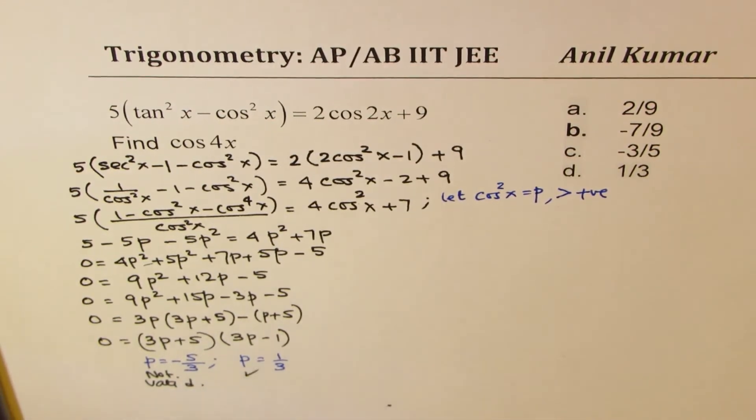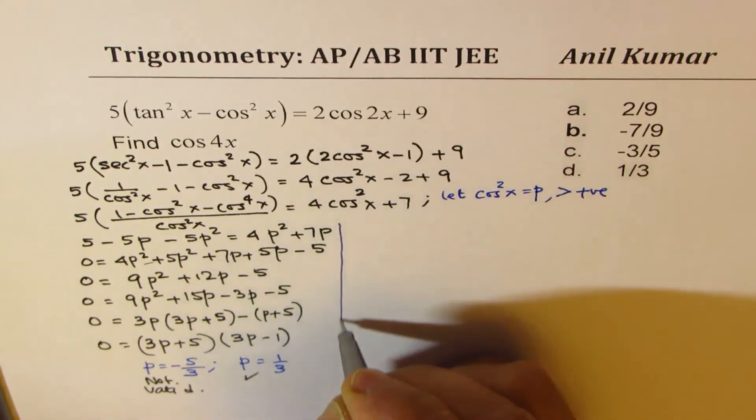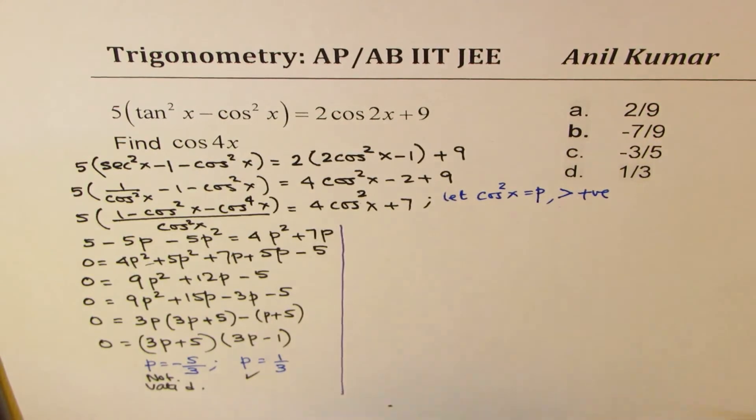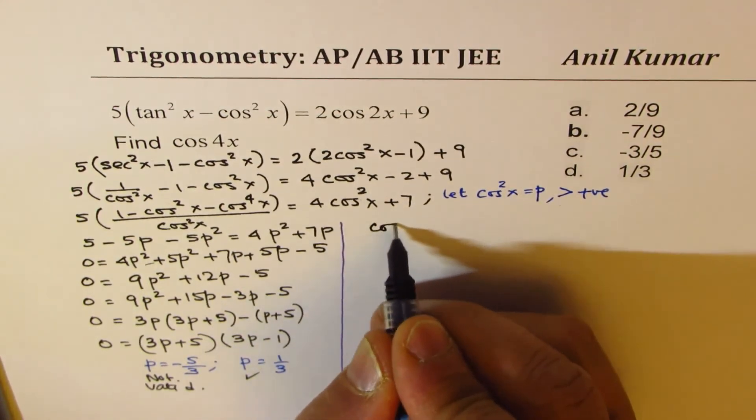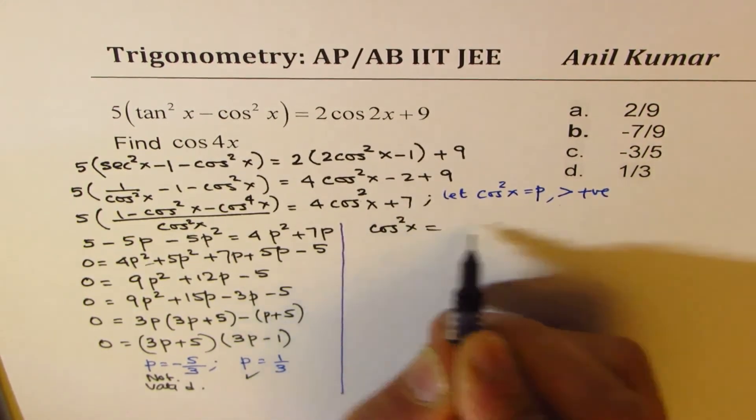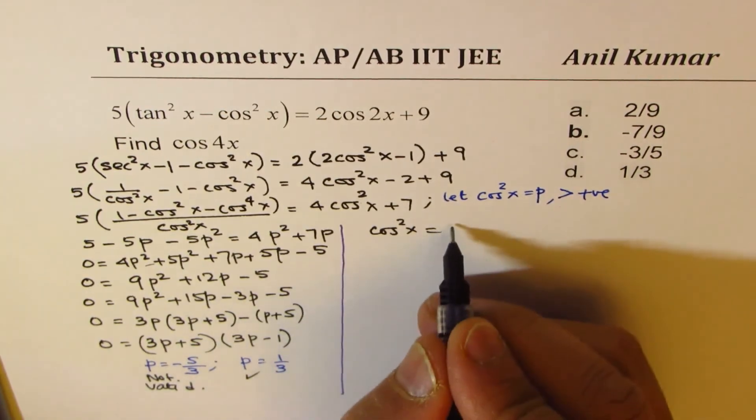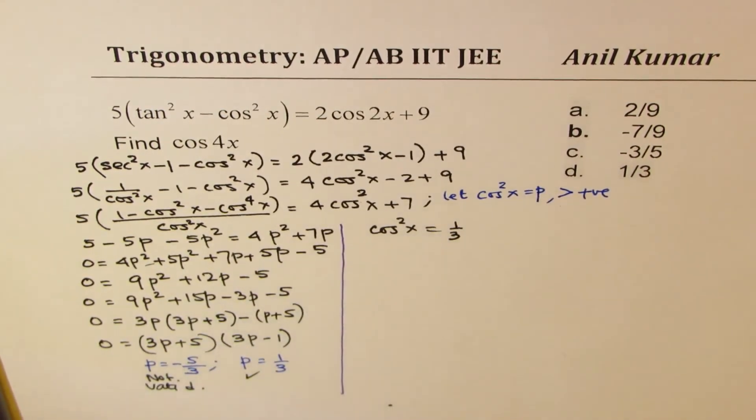However, that is the valid answer. So we do have a solution for cos square x, which equals to p as 1 over 3. So cos square x is 1 over 3.